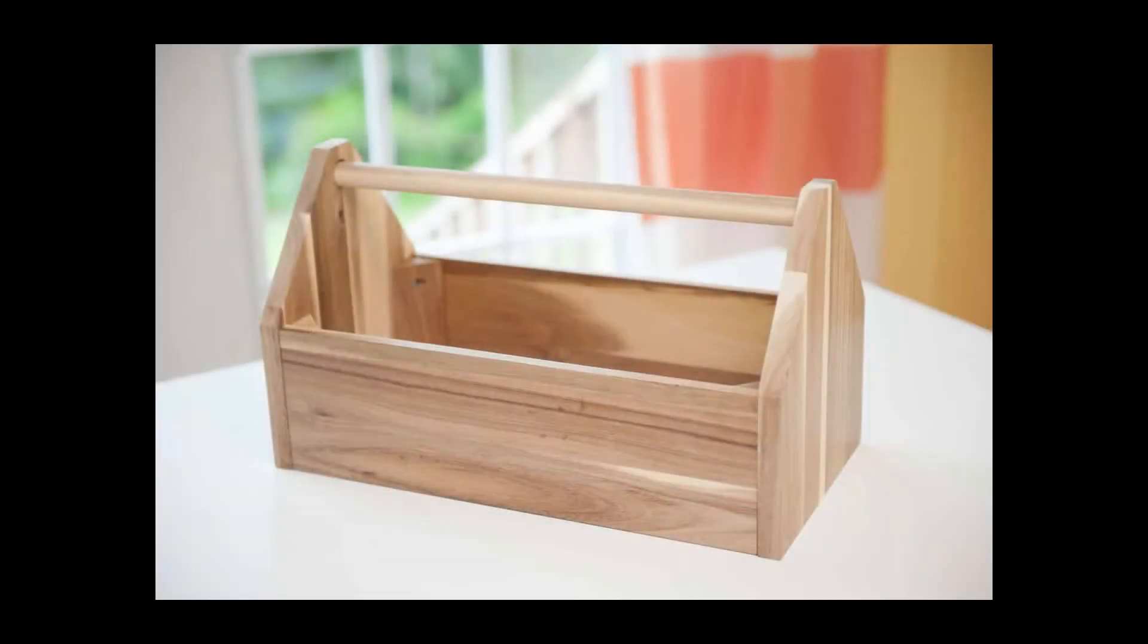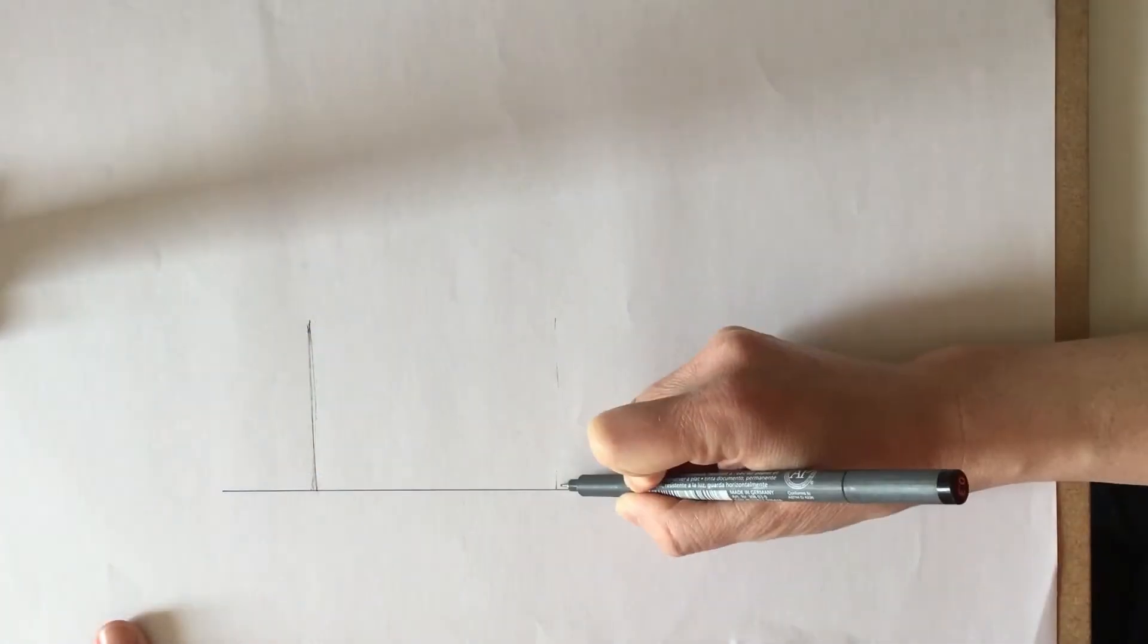The project I'm going to be doing it on is this toolbox that you can see in the picture. It's made from wood, so you can see it's got a cylindrical handle at the top and it's got corners inside it that join it together.